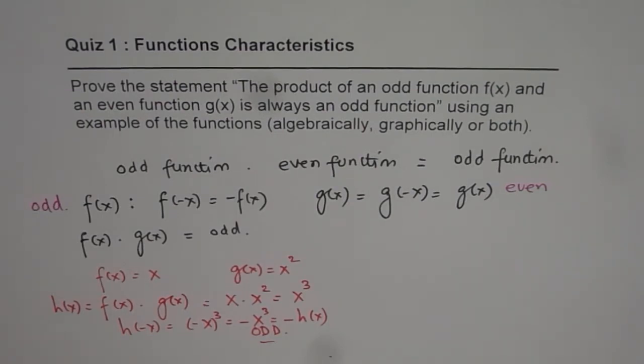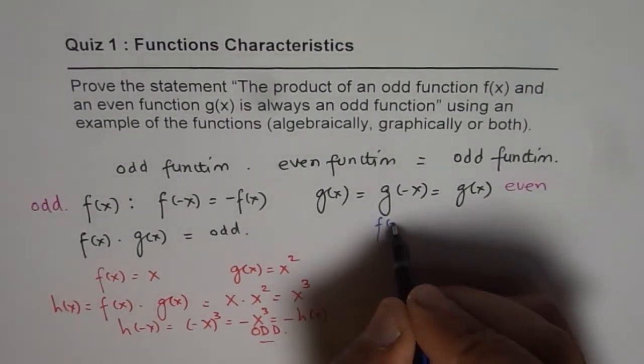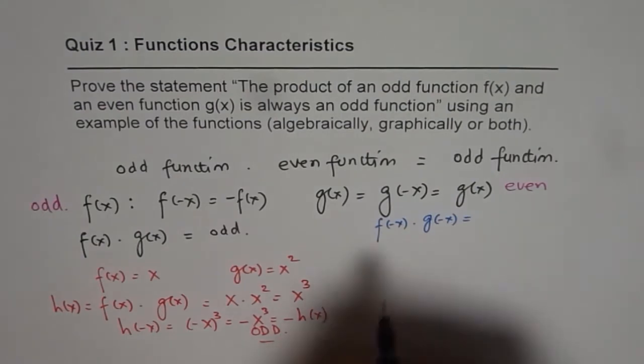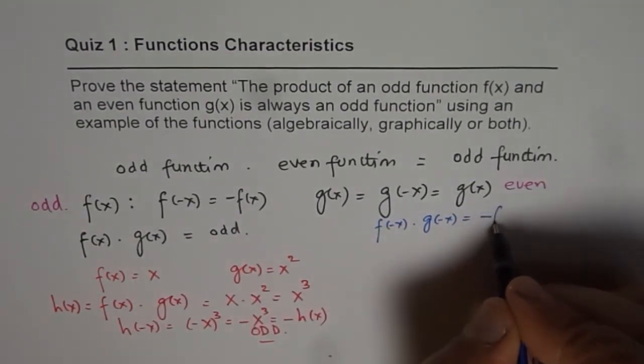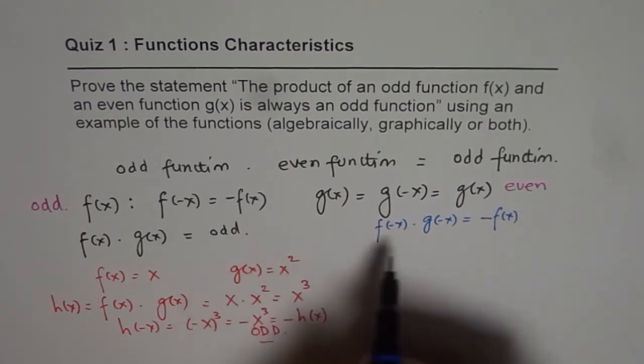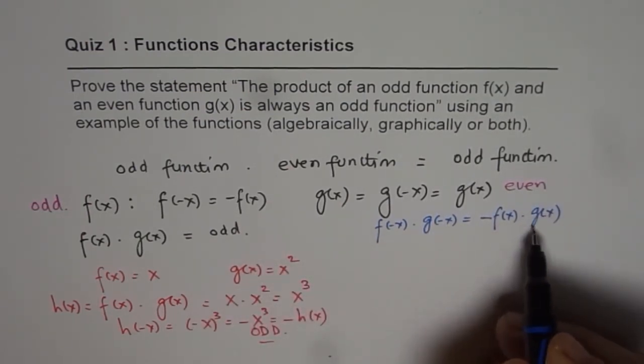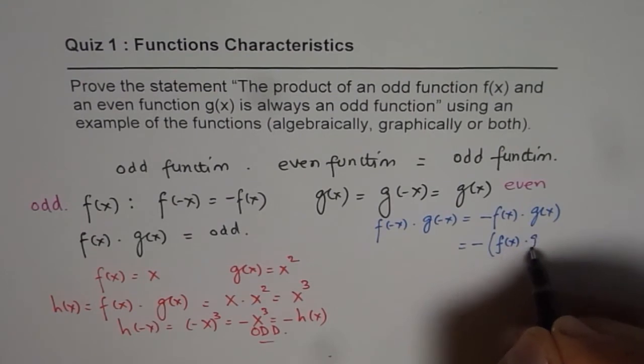Now, the other way could be, let's do mathematical proof. That is f(-x) times g(-x) is equal to what? f(-x) is -f(x), we will write this as -f(x). And g(-x) is g(x). So what do we get? We get -f(x) times g(x).